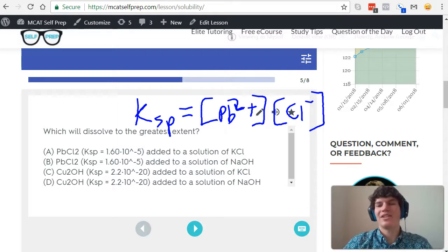As you can imagine, if KSP is increased, that's going to result in more ions in the solution because a bigger number multiplied by a bigger number is a bigger number overall. The higher we make this KSP, the more Pb2+ and the more Cl- we'll have dissolved in our solution.